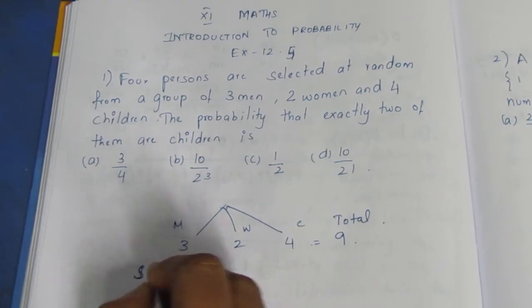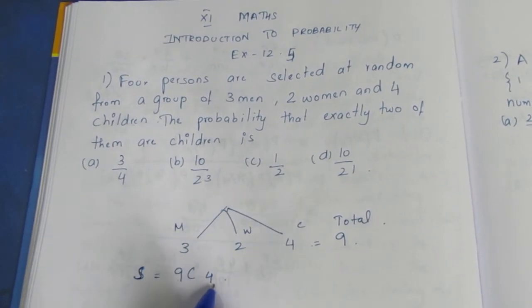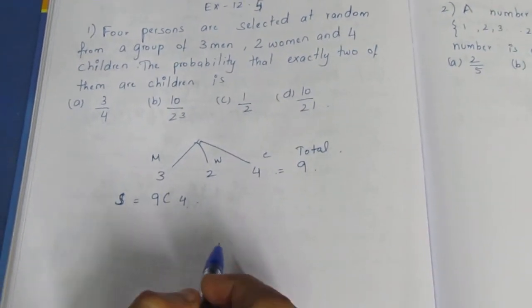If you look at the sample space, S is 9C4. You choose 4 persons from 9. Since order doesn't matter, it is a combination.